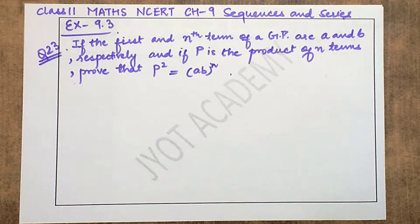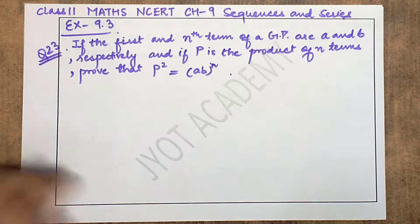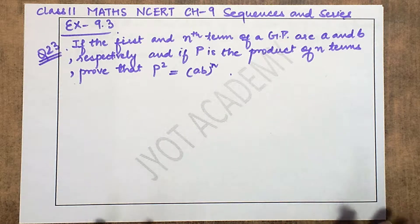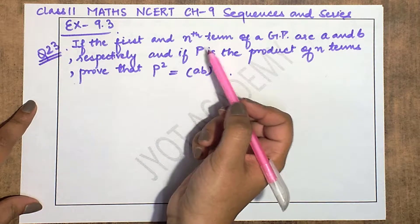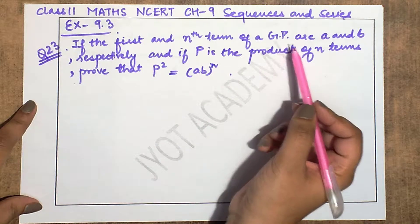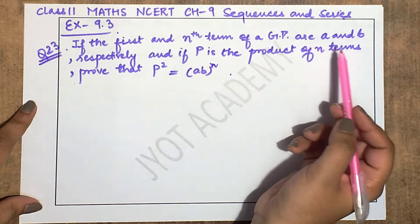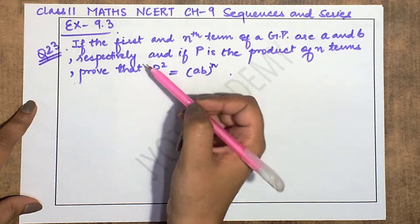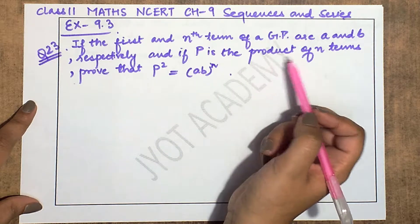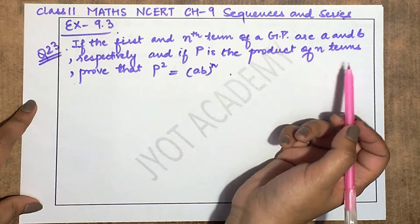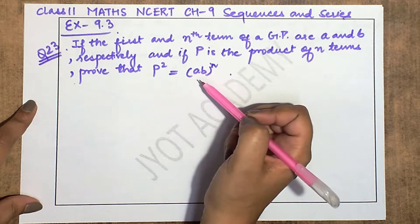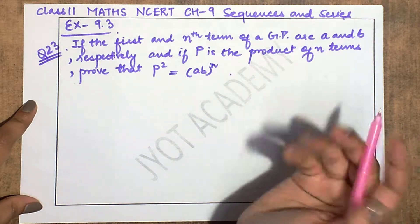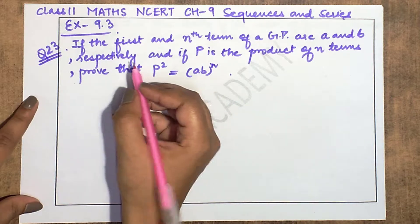Hello students, welcome back to my YouTube channel. Today we will look at Exercise 9.3, Question Number 23. If the first and nth term of a geometric progression are a and b respectively, and if p is the product of n terms, prove that p² = (ab)^n.